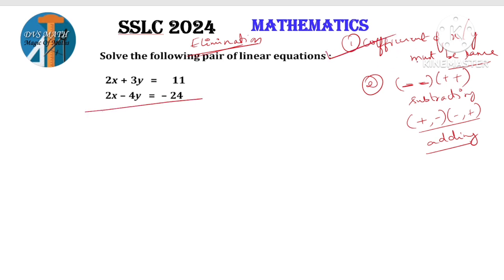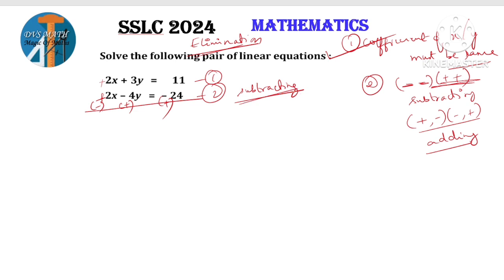Step number 1: the coefficient of x or y must be the same. Here 2x, 2x — they are the same, so we go directly. Write equation 1 and equation 2. Check the signs — both are plus, same sign, so I will go for subtracting. Subtracting means changing the sign of the second equation. Plus 2x minus 2x — cancel, eliminate. Now 3y plus 4y gives 7y. 11 plus 24 is 35. So 7y = 35, y = 5.